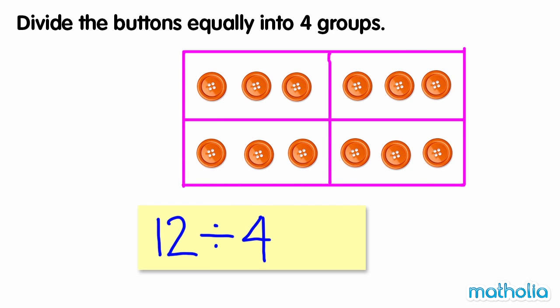We have divided the buttons equally into four groups. In each group, there are three buttons. So twelve divided by four is equal to three.